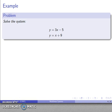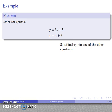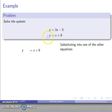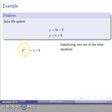Let's take a look at the system y equals 3x minus 5 and y equals x plus 9. I want to solve for one variable in terms of the others — and here I've already solved for y in terms of x in both equations. Now I'll substitute into one of the equations. I have y equals x plus 9, and I know y is also the same as 3x minus 5. So anywhere I see y, I can replace it with 3x minus 5. I replace this y with 3x minus 5 — and there's my substitution.